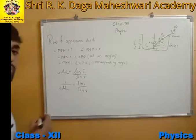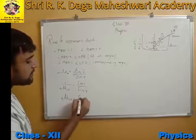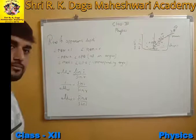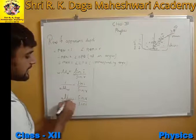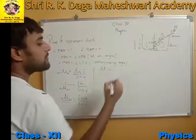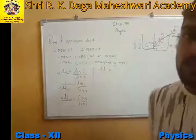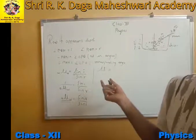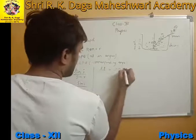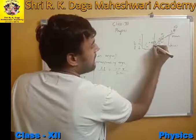By the principle of reversibility, 1 upon (a_nu_w) equals sin i by sin r, and inverting this gives a_nu_w equals sin r by sin i. For convenience, we write this simply as nu equals sin r by sin i.